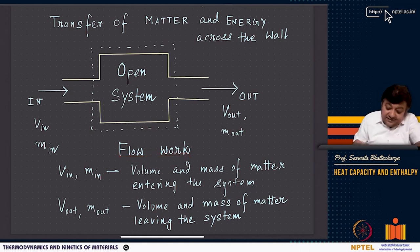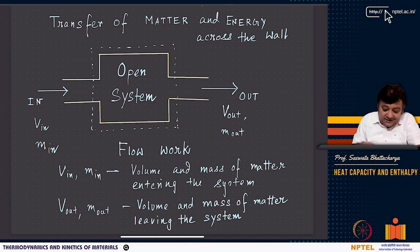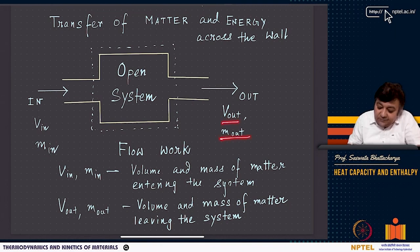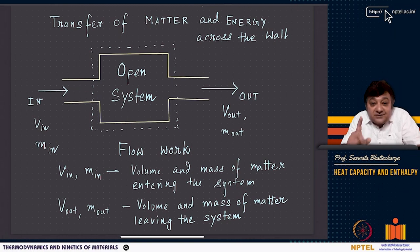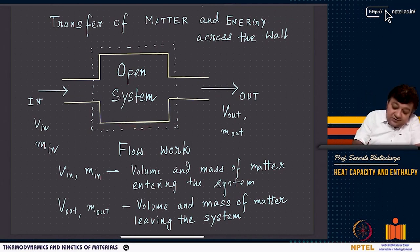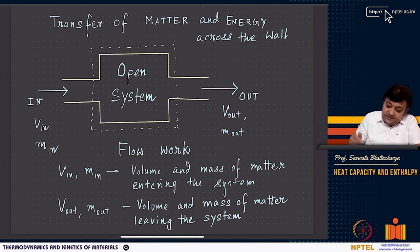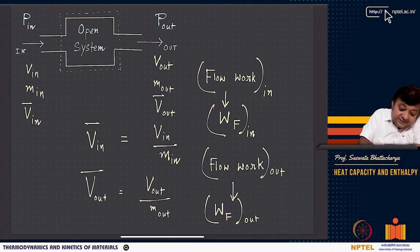We define V_in as the volume at the inlet of the substance being pushed in, and M_in as its mass. Similarly, V_out and M_out are the volume and mass of the substance being pushed out. The specific volume V-bar_in is V_in divided by M_in, and V-bar_out is V_out divided by M_out.